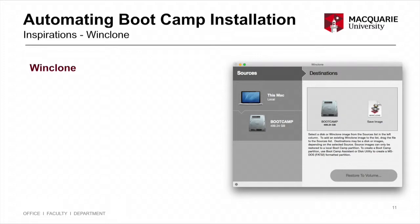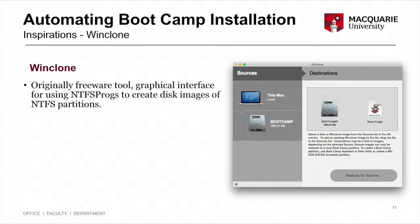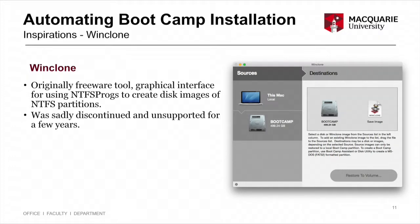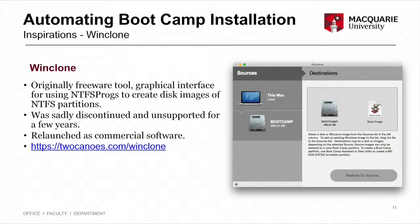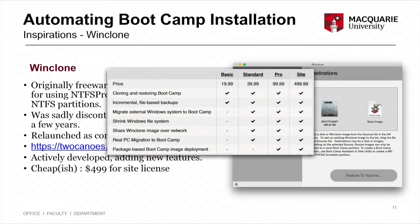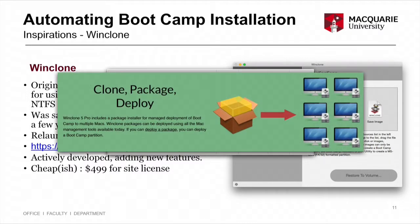We've been using a tool called WinClone to make our Boot Camp images for a long time. Originally it was freeware — a graphical interface to an NTFS driver to build images of NTFS partitions. Sadly it got discontinued, leaving us in a bind. We had to do some hacks for a couple of years, but right when we needed it, the author brought it back as a commercial package from the Two Canoes website, and it's actively developed now. We found out you can use it to create Apple package installers of your image — and if you've got a package installer, you can do a lot with that. It's $49.99 for a site license, so just go ahead and get it.